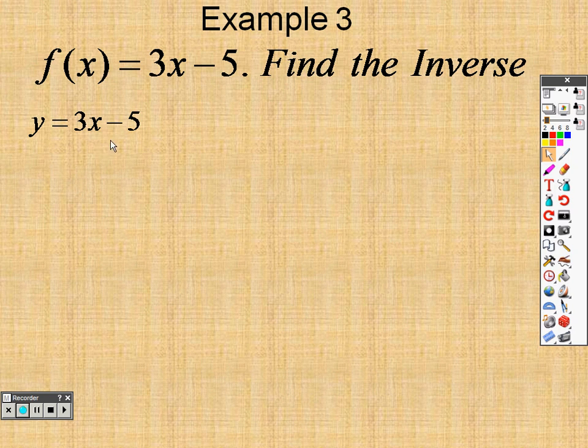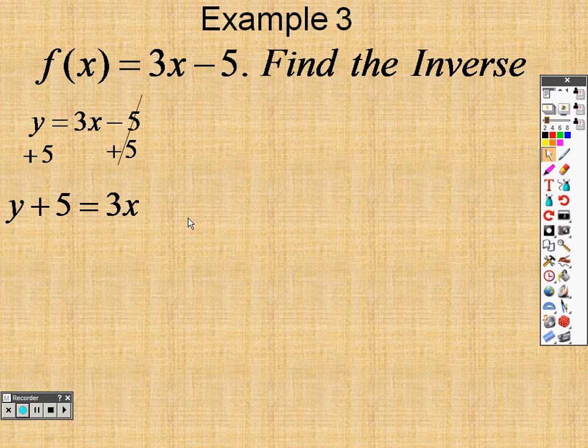And what we want to do is basically solve for the x. So I want to move everything over and get x all by itself. In order to do that, I'd add 5 to both sides. I get y plus 5 equals 3x. And to get x all alone, I would divide both sides by 3. The 3s cancel out, so we get x equals y plus 5 over 3.